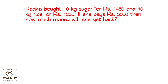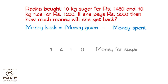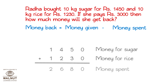Radha bought 10 kgs of sugar for rupees 1,450 and 10 kgs of rice for rupees 1,230. If she pays rupees 3,000, then how much money will she get back? We have to find out the money that Radha gets back. We know the total money she paid, and from that we subtract the money she spent. The money she spent is the money for sugar plus the money for rice. So, we do the addition. Rupees 2,680 is the money spent.